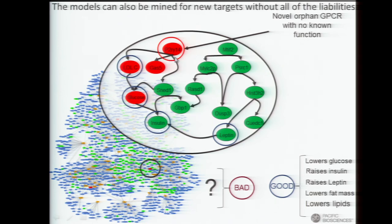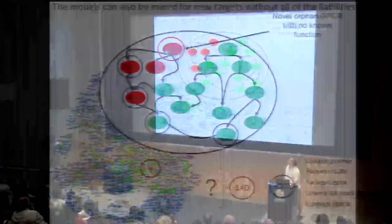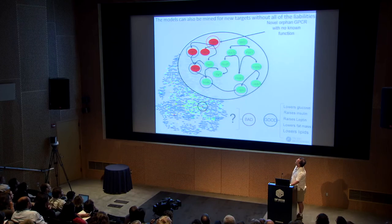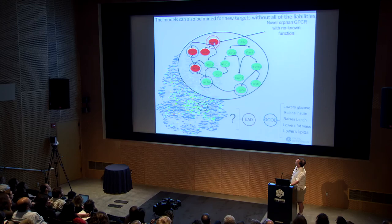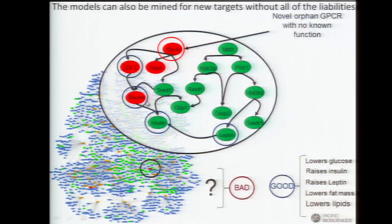But we can also search the network for causal regulators that affect things all in the good direction. Here's P2RY14 — a key information hub node in the network. We predicted that if you down-regulate it, you're going to raise insulin levels, lower glucose levels — that's good. You're going to lower cholesterol levels — that's good. You're going to increase leptin levels and decrease fat mass — that's good. So we were seeing this acting in all the good directions without any of the liabilities seen for other genes like PPM1L.